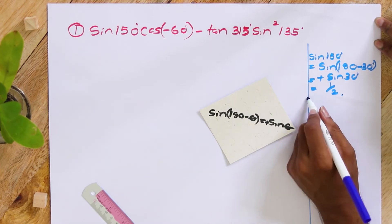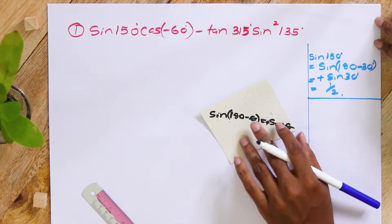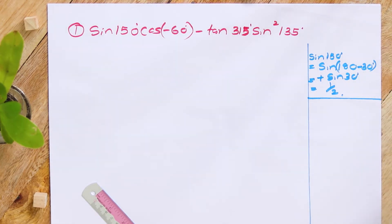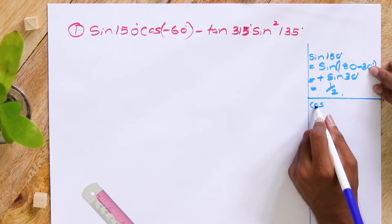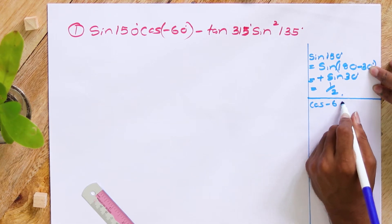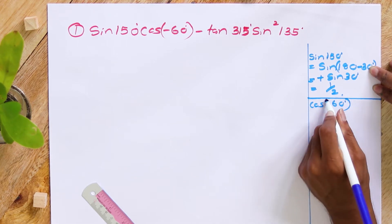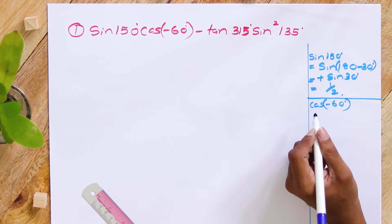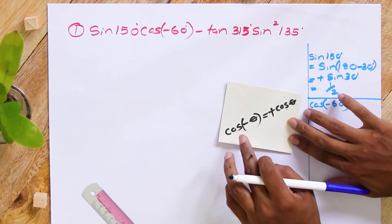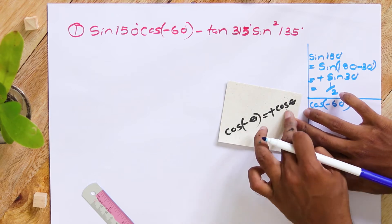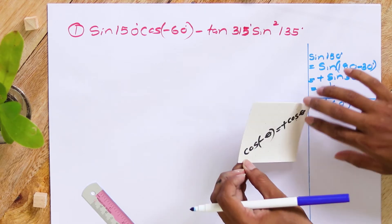Now, if you consider cos(-60°), remember that cos(-θ) = +cos θ.